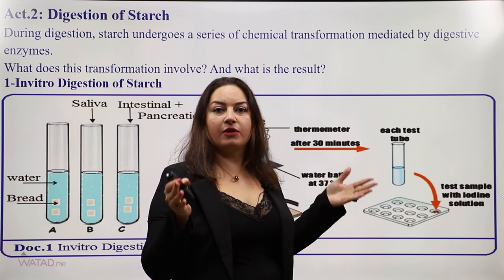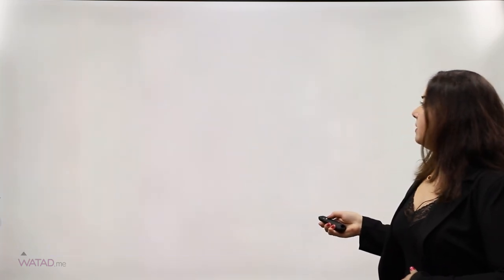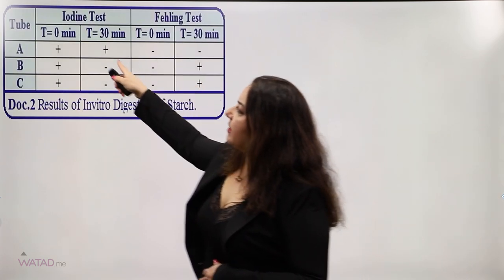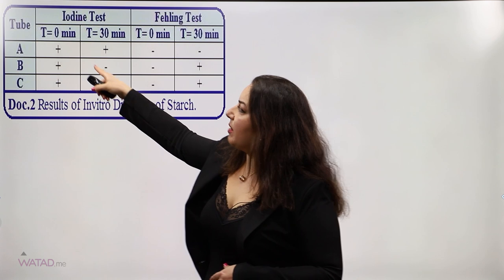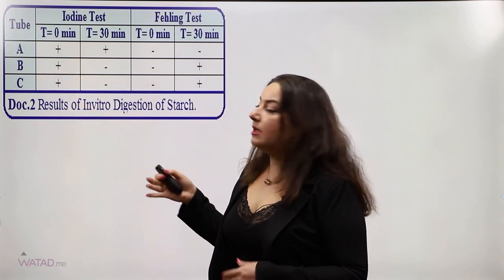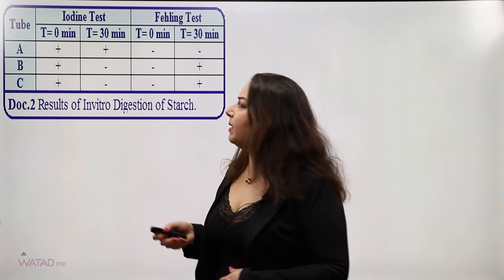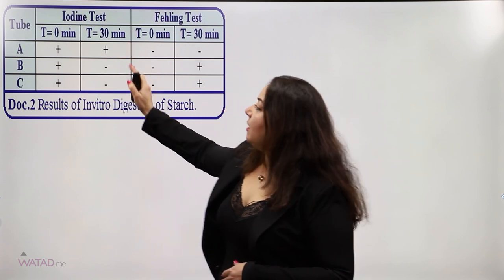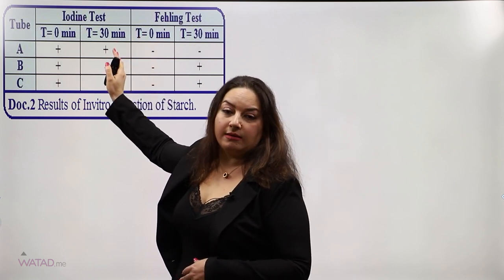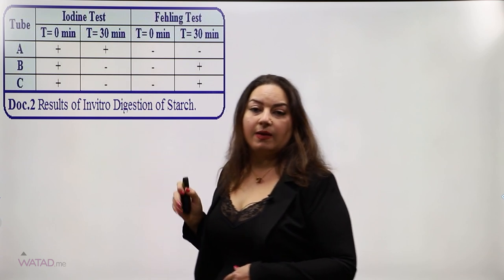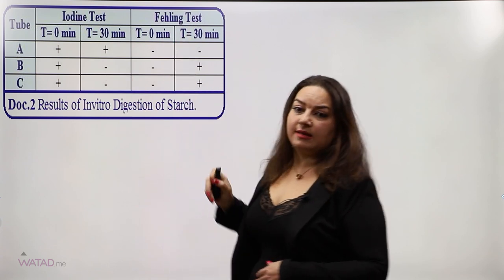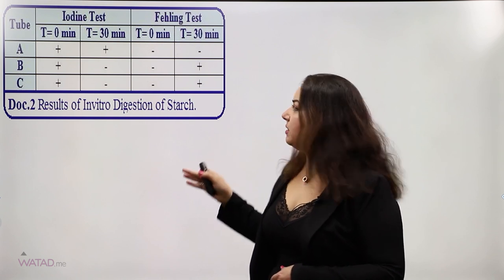Finally, we make a test with iodine solution to check whether starch digestion occurred or not. At the beginning of the experiment, the iodine test shows a positive result in tubes A, B, and C, indicating the presence of starch — meaning digestion has not taken place yet. After 30 minutes, only test tube A containing water and bread shows a positive result, indicating the absence of digestion.